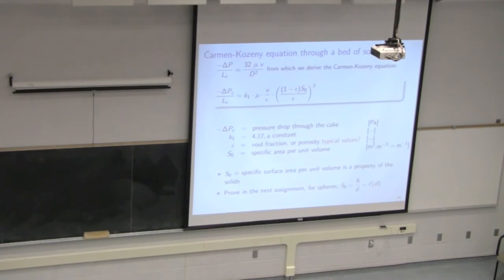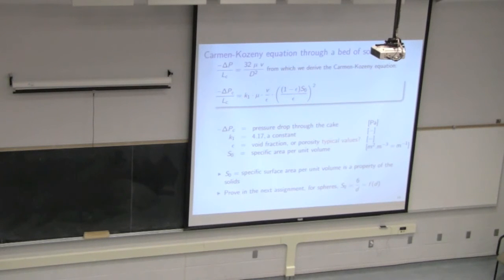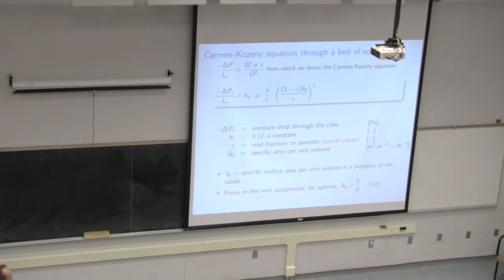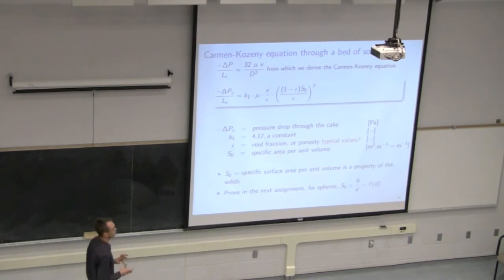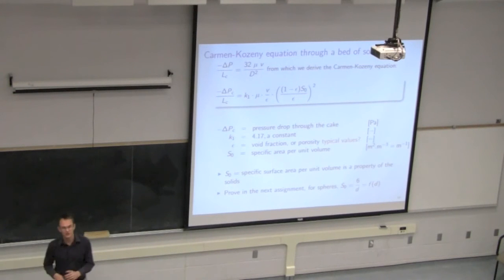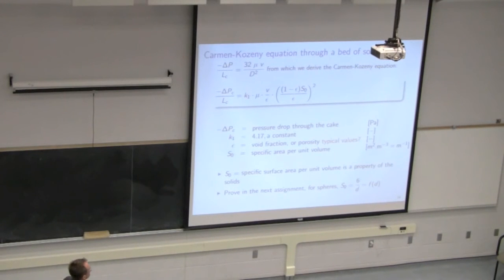Two important things about that equation: we rely on knowledge of the packed bed void fraction epsilon, and S0, the specific surface area per unit volume of the particles. These are two parameters which we cannot possibly predict from first principles except for the most arbitrary, unrealistic cases. So we have to resort to experimental work to determine epsilon and the area of our particles per unit volume.